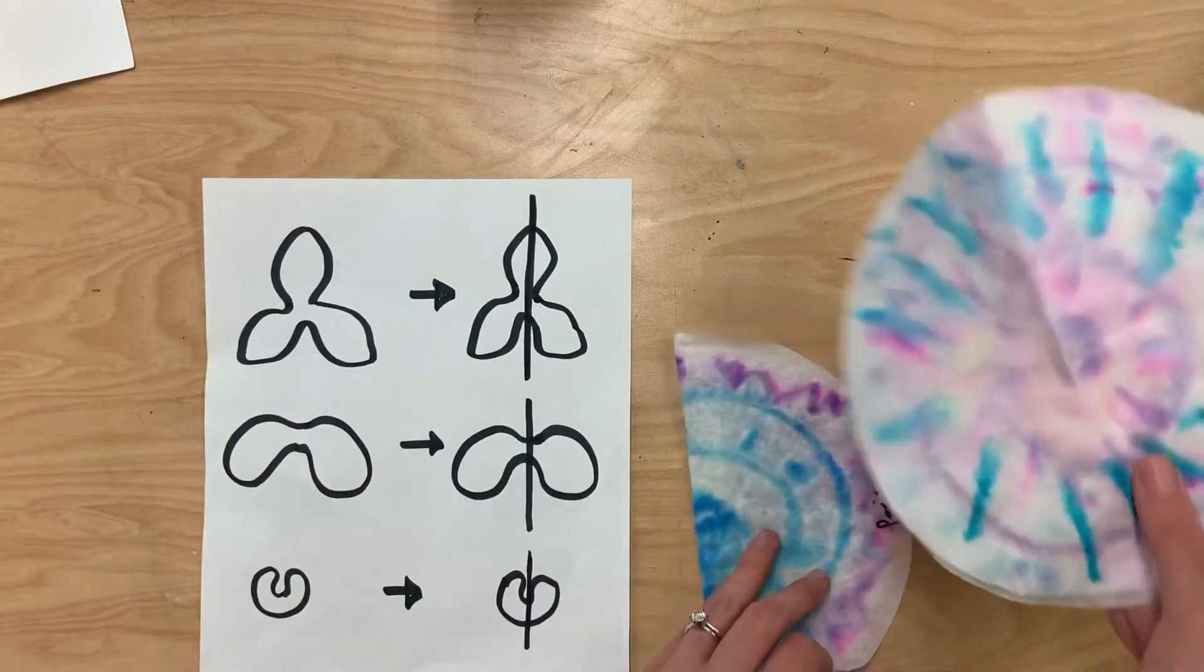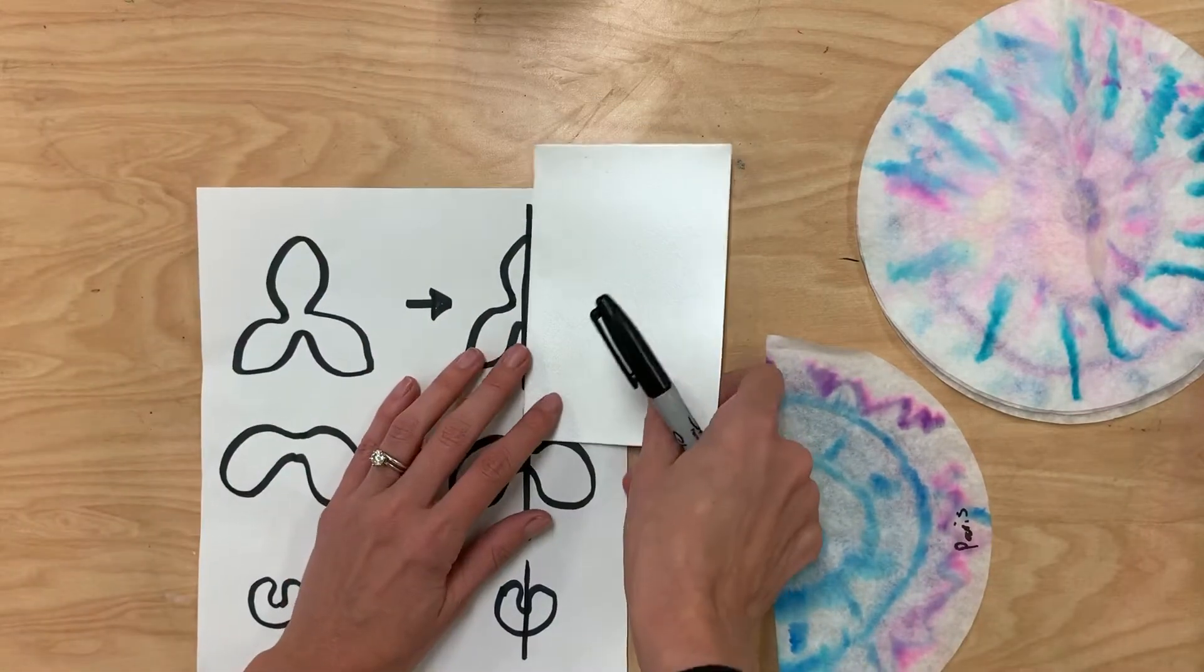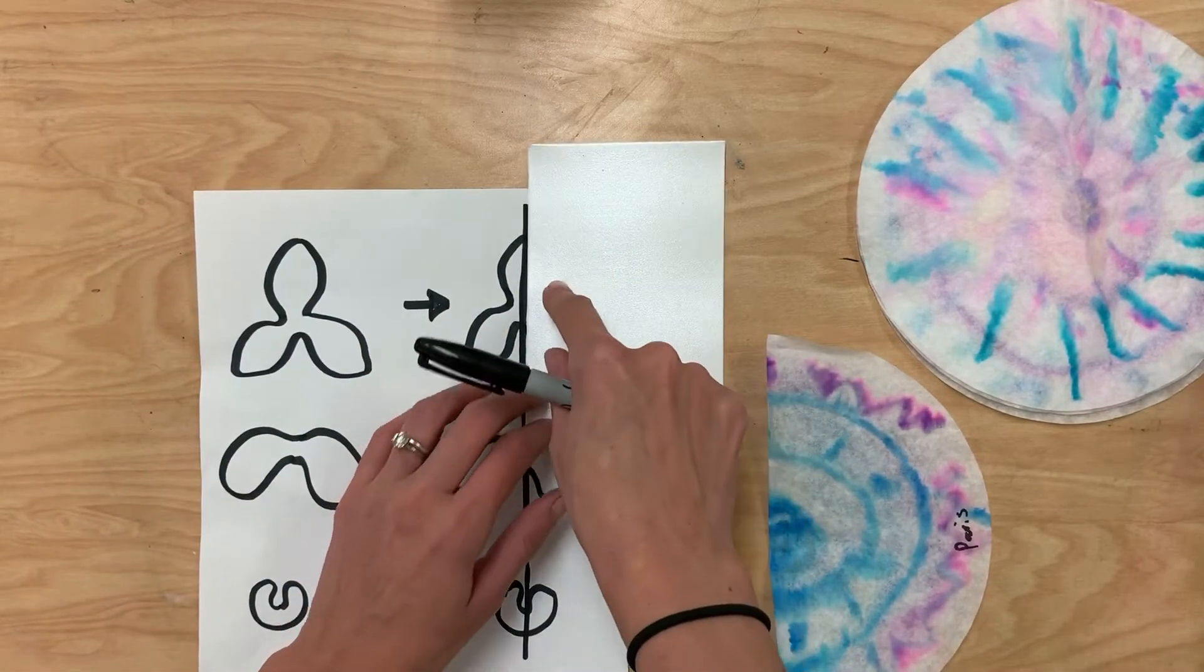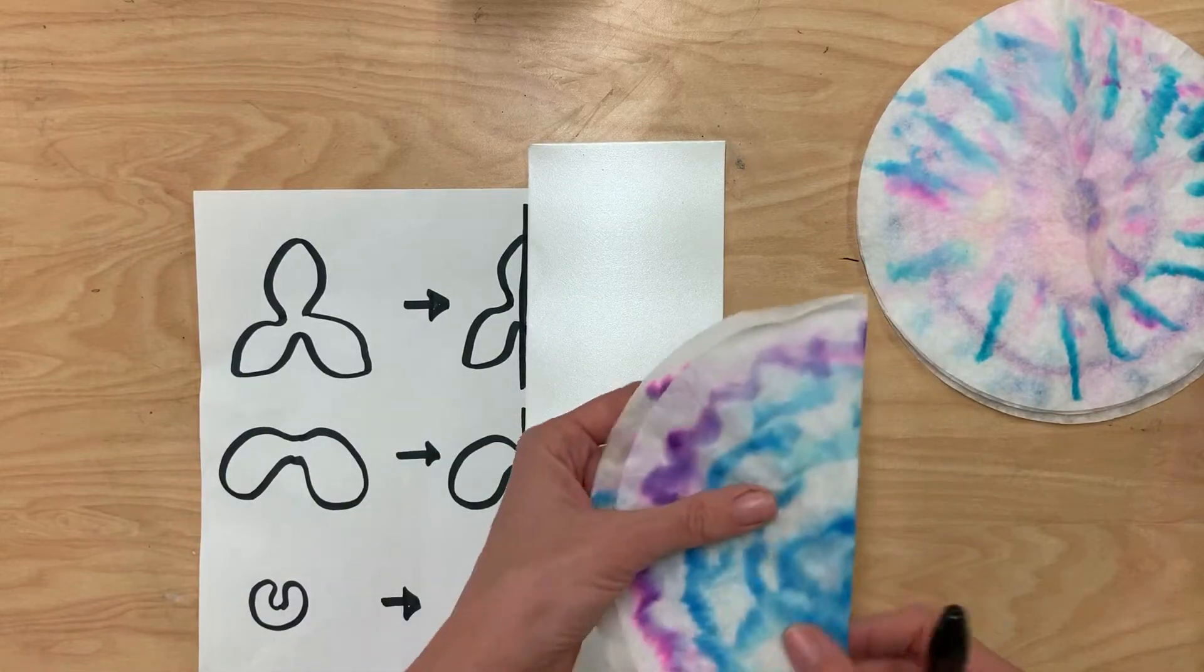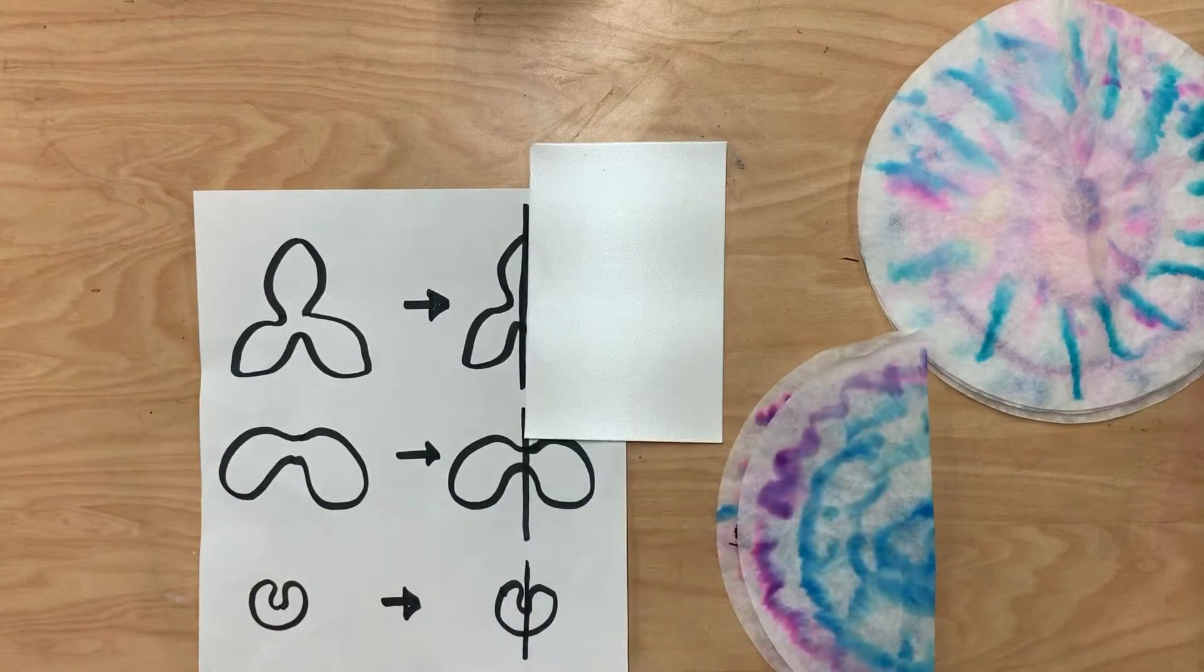So for each one of these little coffee filters, we're going to fold one in half, and I'm going to use a separate sheet of paper to block off half of this so that I can see it. And then my straight line is going to be on the same side where this would be so that I can copy the same thing.